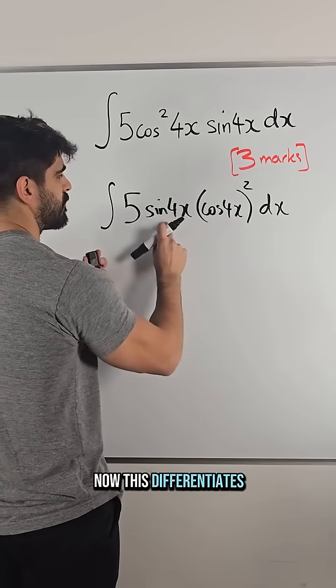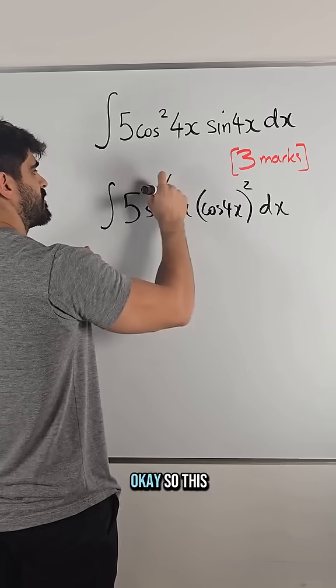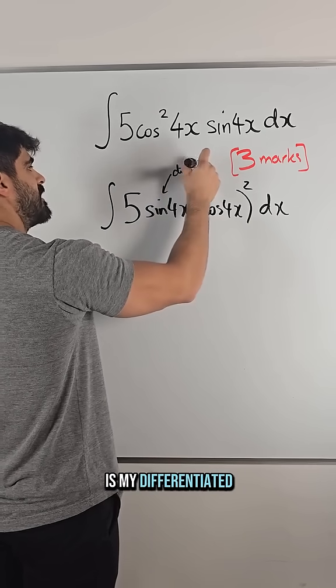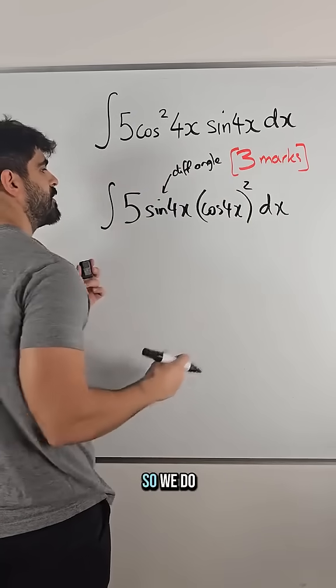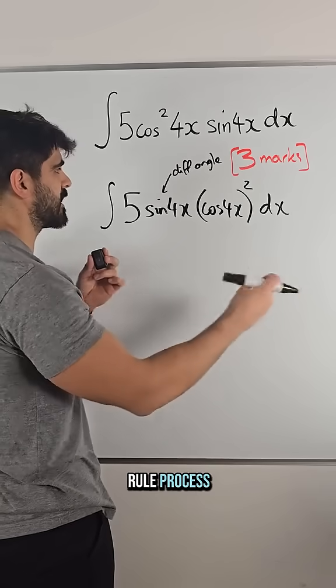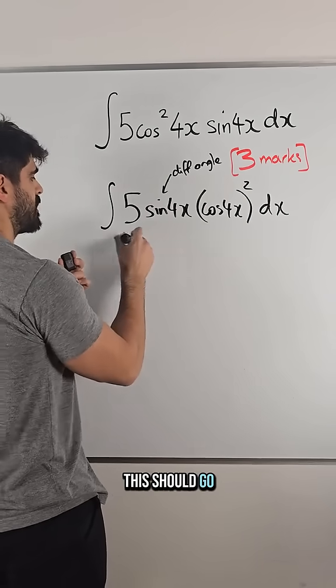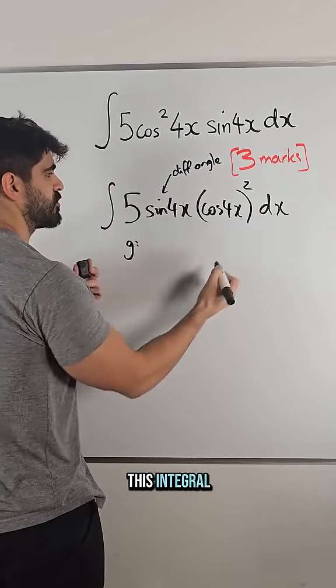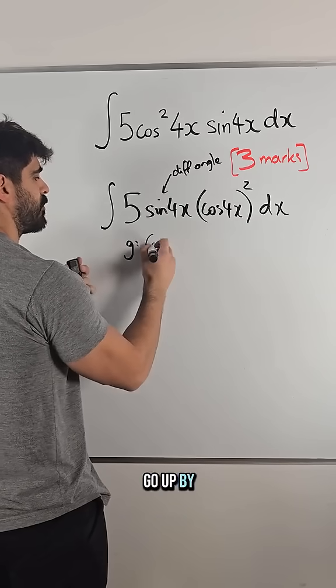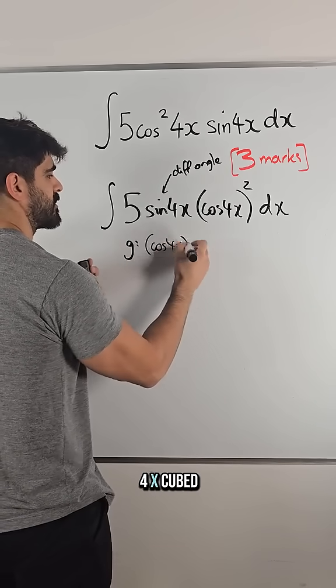Now this differentiates to something like this, so this is my differentiated angle. So when we do the reverse chain rule process, this should go. So my guess in terms of this integral is that this power function is going to go up by one power. So I have cos4x cubed.